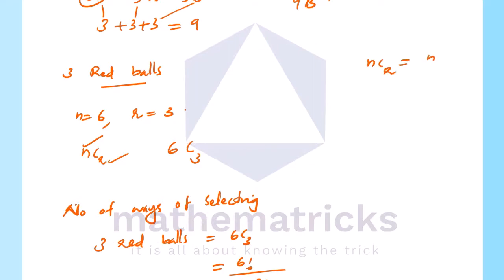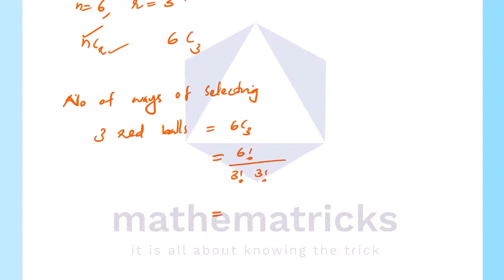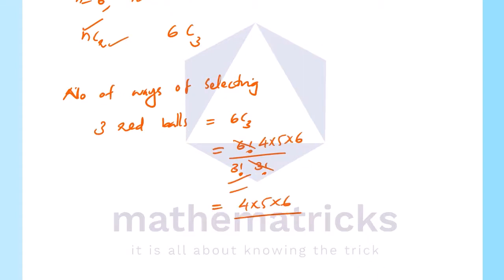The NCR formula is: n factorial divided by r factorial into n minus r factorial. Here n is 6 and r is 3. So 6C3 equals 6 factorial divided by 3 factorial into 3 factorial. The remaining numerator after cancellation is 4 into 5 into 6.